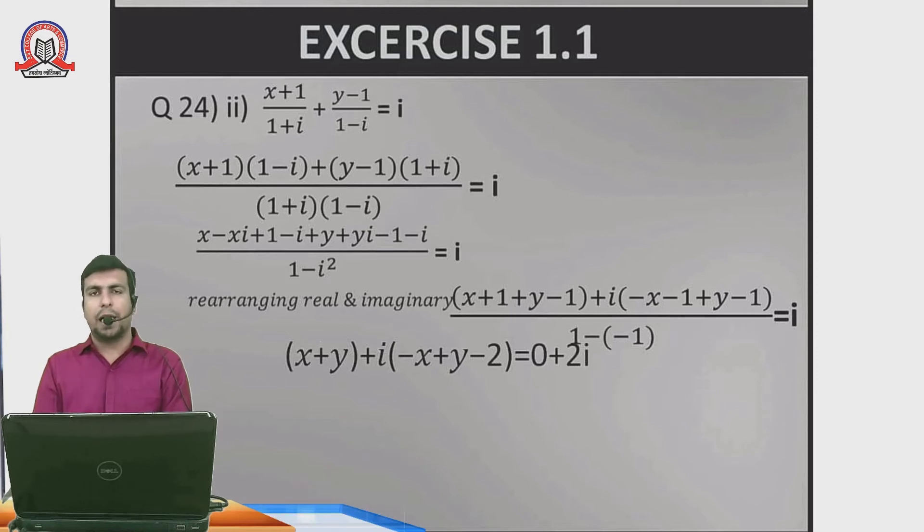The denominator: 1 minus minus 1 equals 2, and transferring to i gives 2i. For the RHS real part, there is none, so I write 0. The first bracket simplifies to x plus 1 plus y minus 1, where 1 and minus 1 cancel, leaving x plus y. The i bracket gives minus x plus x plus y, leaving y minus 1 minus 1, which is minus 2.